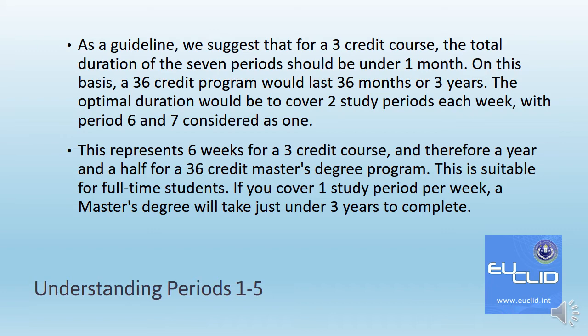The optimal duration would be to cover 2 study periods each week, with periods 6 and 7 considered as 1. This represents 6 weeks for a 3-credit course, and therefore a year and a half for a 36-credit master's degree program. This is suitable for full-time students. If you cover one study period per week, a master's degree will take just under 3 years to complete.